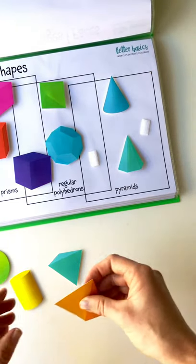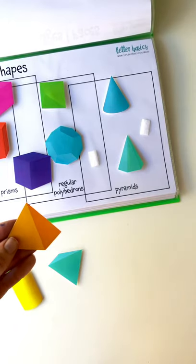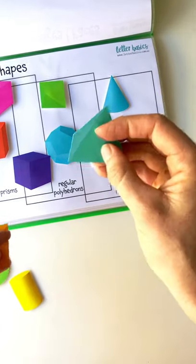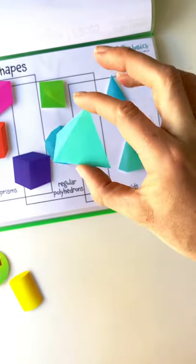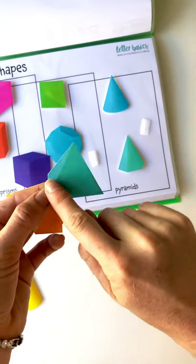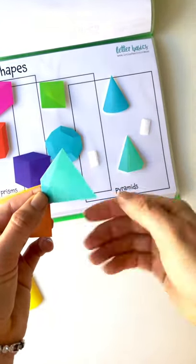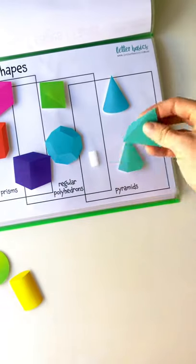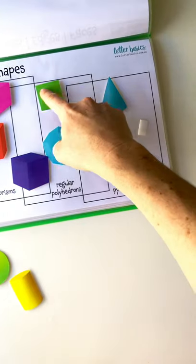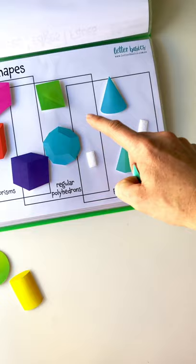Our regular polyhedron is this pyramid because it's got a triangle this side, that side, behind, and on the bottom. So four identical triangles, which makes it fit into the regular polyhedrons and the pyramids.